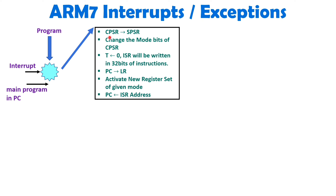First of all, CPSR will get loaded into SPSR. All the interrupts in ARM7 are happening with respect to different modes, and different modes are having their separate SPSR. Those SPSRs are used to load the CPSR of the main program. So first, the main program's CPSR will get loaded into SPSR. Now whatever mode is getting triggered by this interrupt, that will be indicated by CPSR with respect to mode bits. CPSR has D0 to D4 — total 5 bits — that indicate which mode is happening. So after that, mode bits will get changed in CPSR, and the original CPSR of the main program is now stored in SPSR.